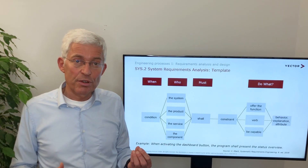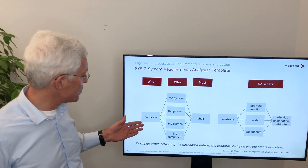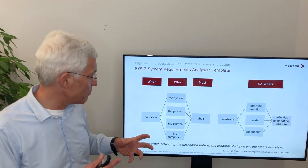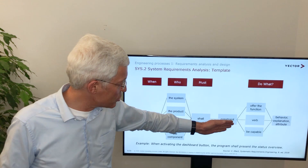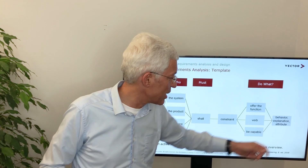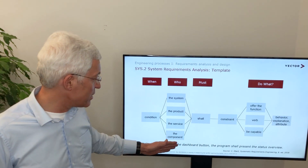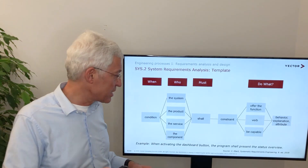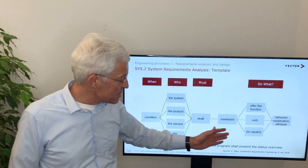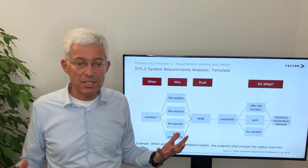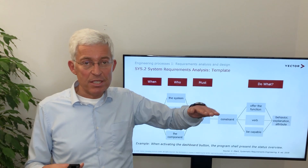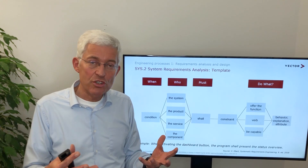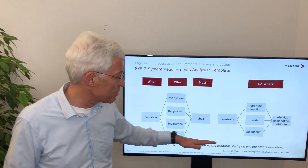Now what is a good requirement itself? A requirement should follow a very simple template structure. The template structure says it starts with an entry condition, then we talk about what is the system or component or product which we want to specify, then what it shall do as a constraint, then the output and some exit condition. As an example: when activating the dashboard button — I press some button — the program shall present the status overview. The entry condition would be I press a button; the exit condition would be there's a status overview. This is the way how we specify requirements and services. Obviously this is the top level of a requirement; below it there can be more details — technical details, decision tables, some relationships with UML diagrams — but the top level of each single requirement should follow this structure.